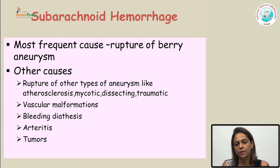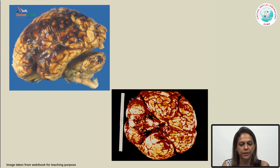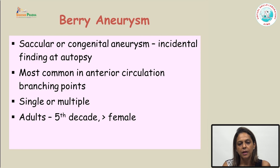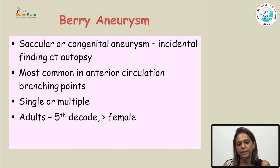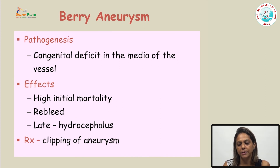The third major cause of intracranial hemorrhage is subarachnoid hemorrhage, the most common cause of which is rupture of a berry aneurysm. Subarachnoid hemorrhage shows a congested dura with engorged vessels, appreciable on both the top and basal surfaces of the brain. A berry aneurysm, also known as a saccular aneurysm, is a congenital developmental defect. Most patients have no clinical symptoms, but due to turbulent blood flow damaging the aneurysm wall, patients in the fifth decade of life can present with massive bleed, leading to high mortality and requiring immediate surgical intervention such as clipping of the aneurysm.